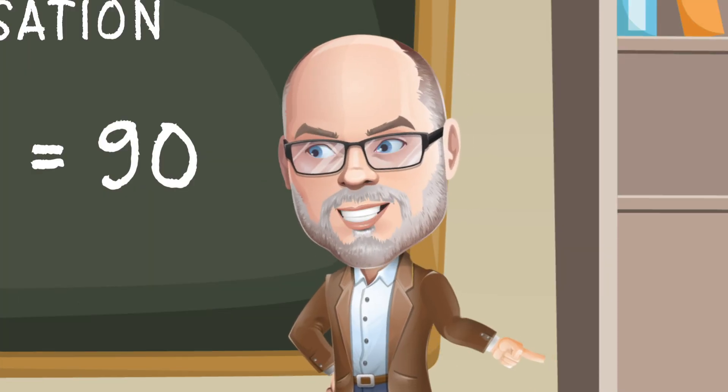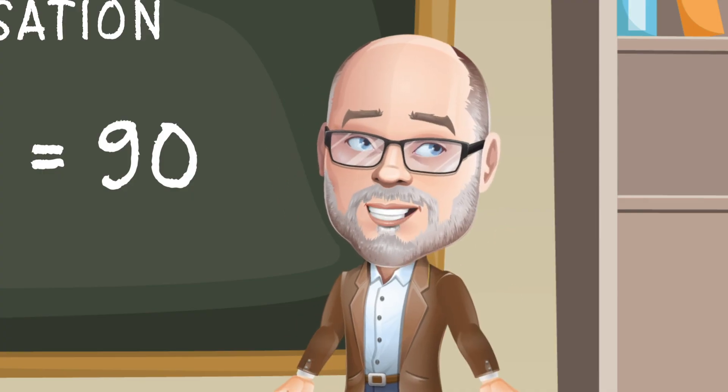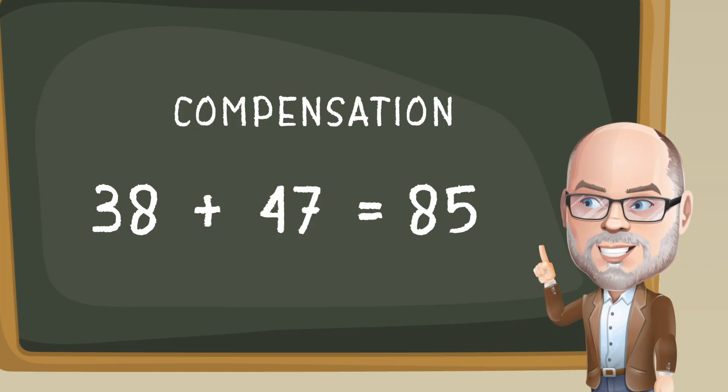But 90 is too much. In fact it's 5 too much. So we have to take that 5 off from 90 and we'll make it 85. So 38 plus 47 is 85.